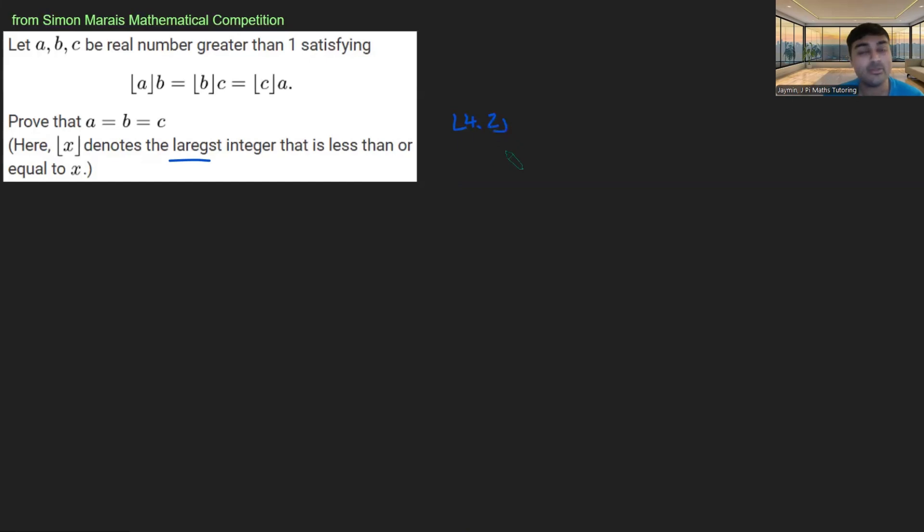So for example, the floor of 4.2 is the largest integer smaller than or equal to 4.2, which of course is 4. So basically rounding your number down.